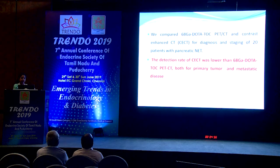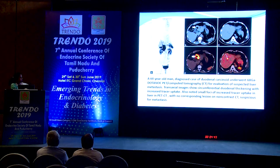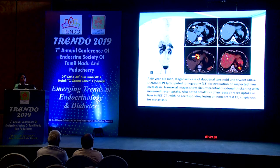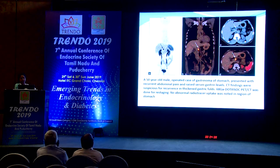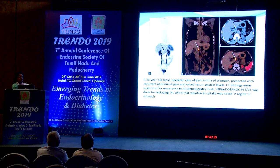The detection rate of contrast CT was lower than DOTA-NOC PET-CT for both primary tumor and metastatic disease. In one case, increased gallium uptake was found in a primary stomach tumor with a liver focus that was not seen on CT — receptor changes showed up before anatomical changes, upstaging the patient to stage 4. Another case showed a pancreatic head lesion with multiple malignant insulinoma and multiple liver lesions.